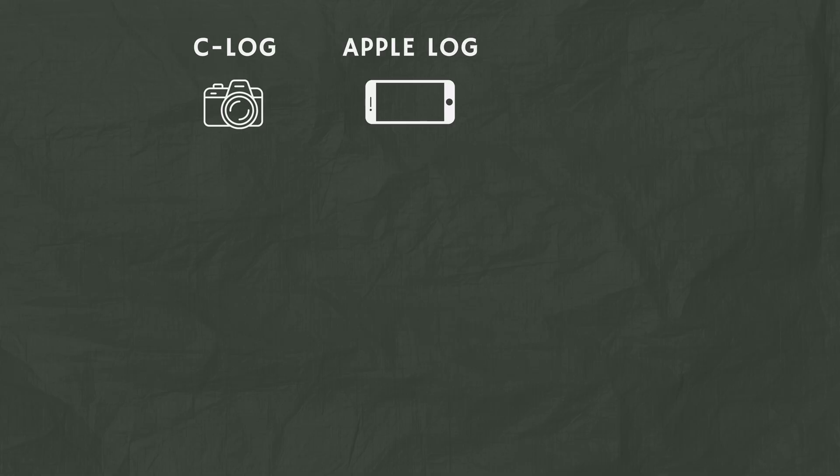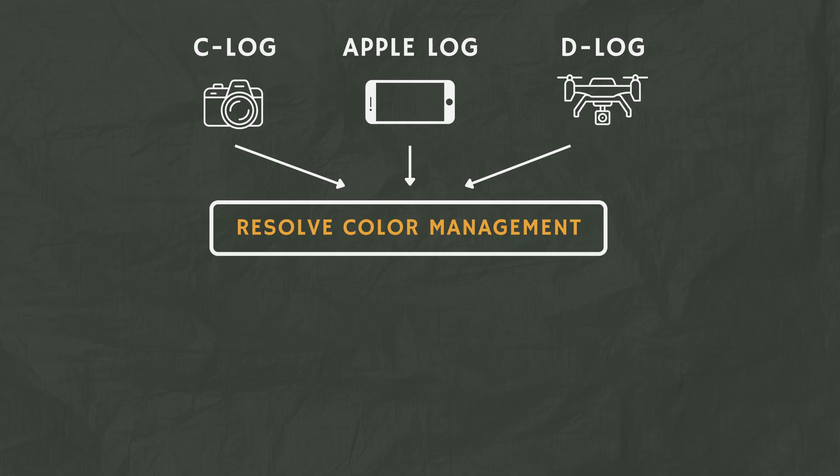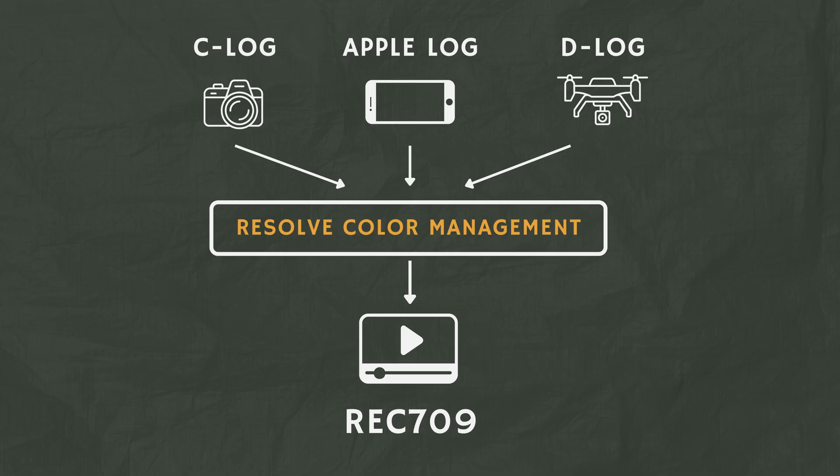Stepping out of the metaphor, it's basically taking all of these different cameras — you might have a Canon camera in C-Log, an iPhone in Apple Log, a drone in D-Log, etc. — and translating all of these different color spaces into one unifying color space, which in most cases is Rec.709. If you don't know anything about color spaces, that's fine. All you need to know is that Rec.709 is the way we view pretty much all video everywhere these days. Whether you're watching something on YouTube, on your phone, on Instagram, on a website — just assume you're going to be translating all your cameras into Rec.709.